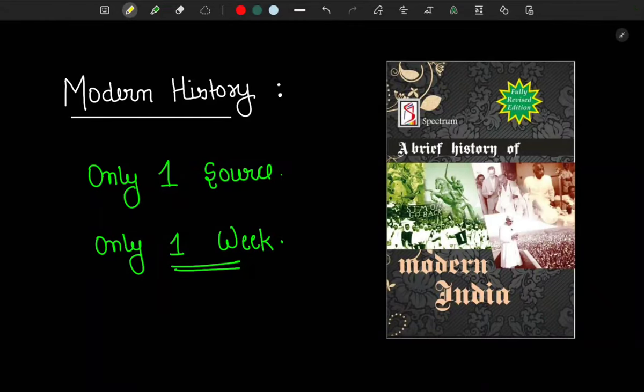Hello everyone, welcome back to Decode UPSC. In this video we are going to discuss about modern history strategy. You can easily finish modern history through one source in only one week if you do it right, and that one source is of course Spectrum by Rajiv Ahir.